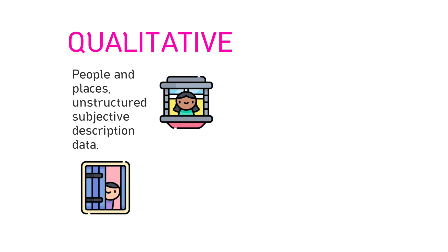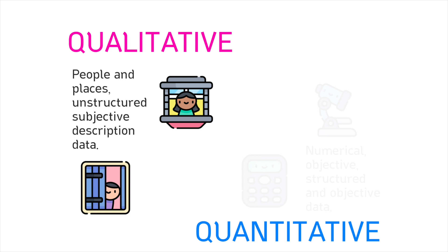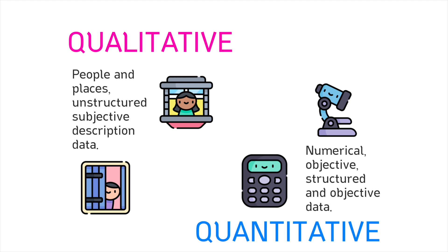Ethnography is a form of qualitative research which focuses on people and places. It involves unstructured, subjective description of data. Quantitative research, by contrast, focuses more on numerical data and statistics, and is typically more structured and objective in its approach.